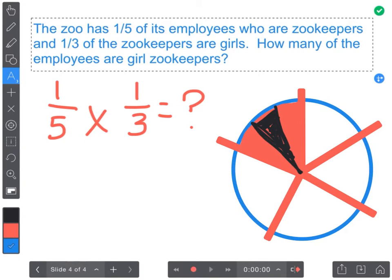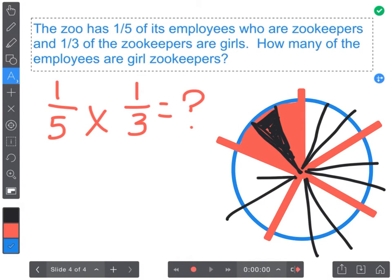But I go ahead and split up the rest of the areas into thirds. Once I've done that I'm going to go ahead and count how many areas. And I'm going to start with my girl zookeepers.